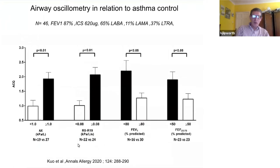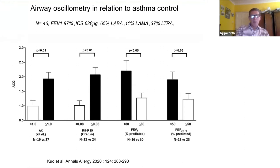Here's another cohort which my current fellow Chris Kuo published in Annals of Allergy, Asthma and Immunology — a smaller cohort of 46, mean FEV1 80 percent, 600 micrograms of inhaled steroid, 65 percent taking LABA, 11 percent LAMA, and 40 percent LTRA — so more on the moderate end of the asthma spectrum.